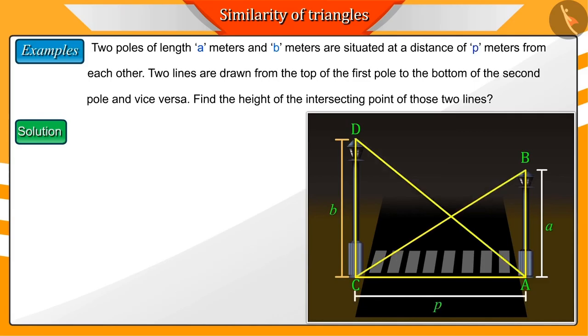Suppose the lines AD and BC intersect at point O. Let us draw a perpendicular from O to the side AC which gives the point L. If CL is equal to x and LA is equal to y, then we need to find the length of OL.